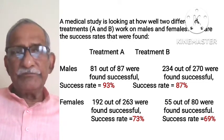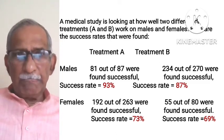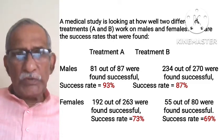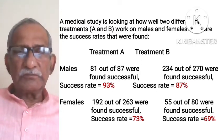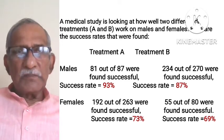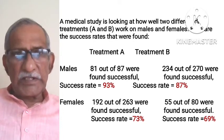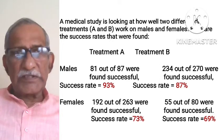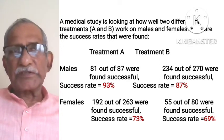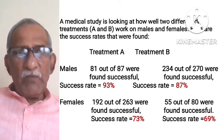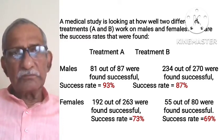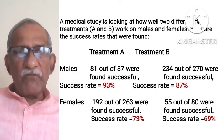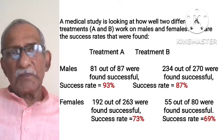Among females, treatment A had 192 out of 263 trials successful, giving a success rate of 73%. Among females, treatment B had 55 out of 80 trials successful, giving a success rate of 69%.